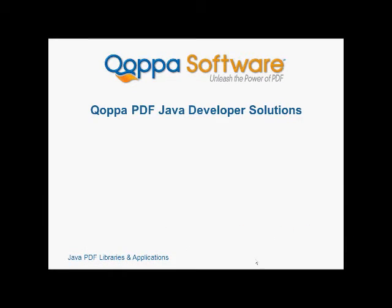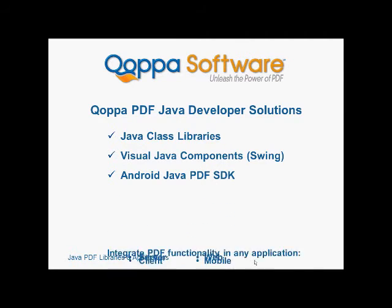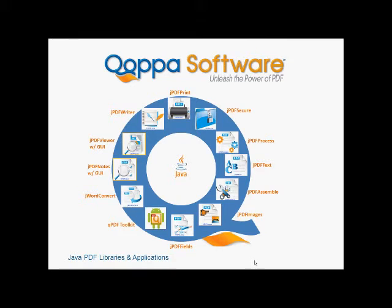The products that Copa delivers include Java Class Libraries, Java Visual Components with a powerful user interface, and an Android Java PDF SDK. Copa's products allow you to integrate PDF capabilities into any Java application — on the server side, on the client side, on the web, or in mobile apps. The international PDF format is extensive, with over 1,300 pages of specifications. Copa offers a suite of 12 PDF libraries to cover every PDF process so you can find the library for the function you need.